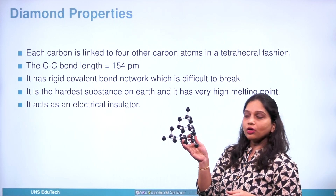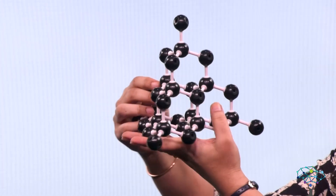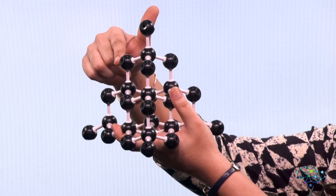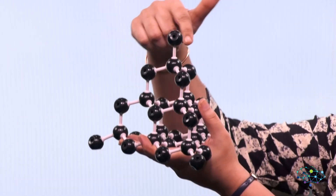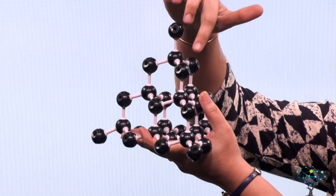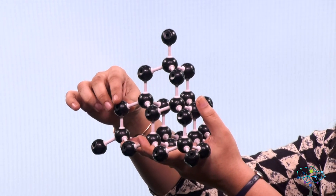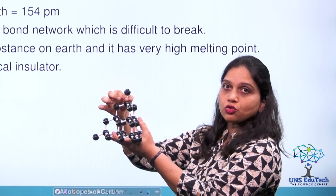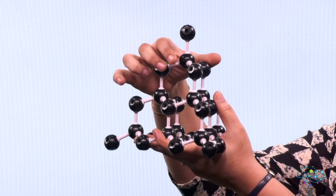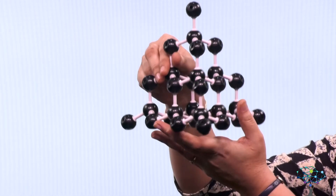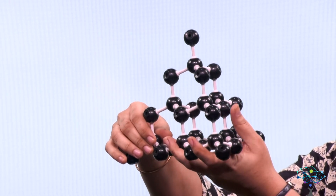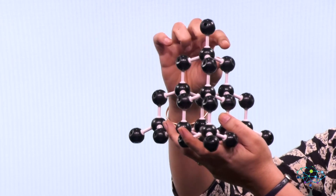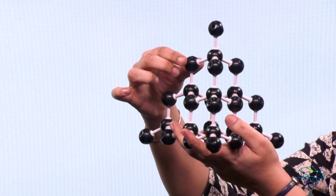Here is a model of a diamond. Each and every carbon is bonded with 4 other carbon atoms through a covalent bond — carbon 1, 2, 3, 4. This bond is very hard and very strong. That is the reason diamond has a very hard structure in a 3-dimensional network. Diamond is the hardest substance in the universe and is very difficult to break, because of this rigid 3-dimensional covalent bond formation between each and every carbon atom.